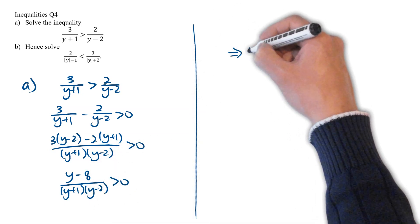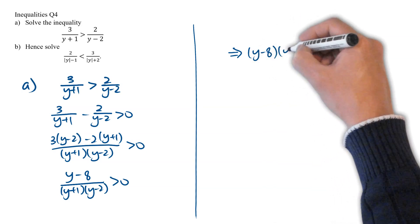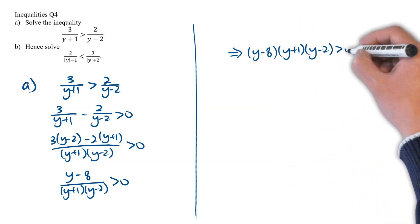Next, we can bring the denominators up to get y minus 8 times y plus 1 times y minus 2, greater than 0.